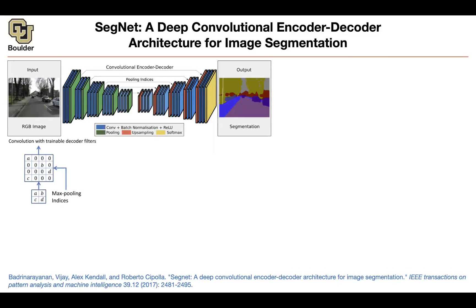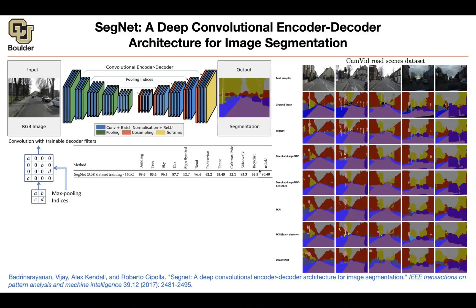Apparently this simple idea is doing very well. Look at the ground truth and look at the predictions — at least qualitatively, it's doing a very good job, even getting the fine details to acceptable accuracy. But this is not the case for the other networks — you are missing trees, you are missing lamps, etc. This is the fully convolutional network. So the simple idea is working very well, and in terms of mean intersection over union, it's getting 90.4%.